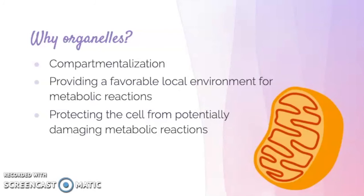So how did we get organelles? The theory of endosymbiosis is one of the most popular explanations for how membrane-bound organelles evolved from free-living prokaryotic cells. The idea is that chloroplasts came from free cyanobacteria that were eventually engulfed through phagocytosis and adopted a symbiotic relationship with larger cells. Later on, these became parts of the cell that were synthesized as the cell replicated as well.